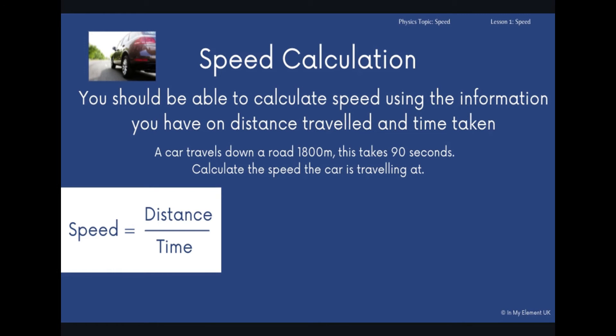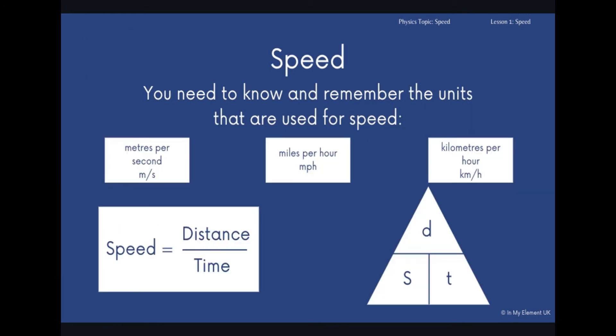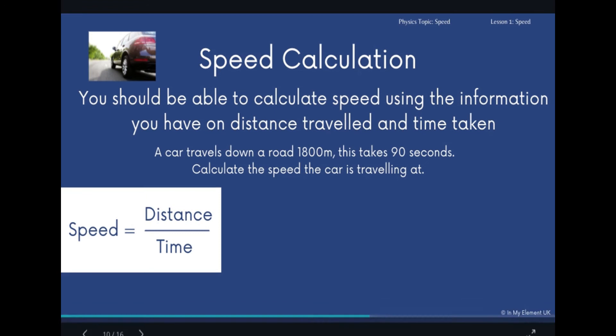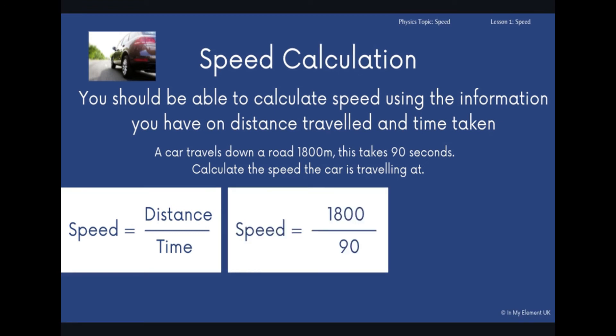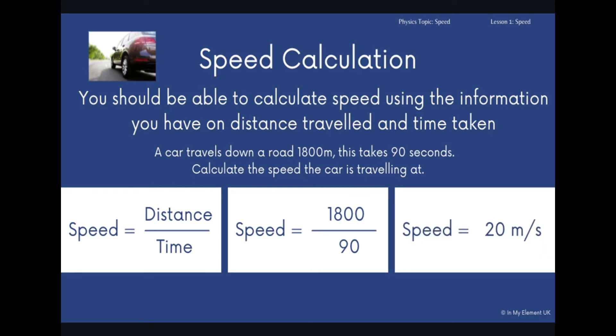In our formula triangle, we just pop back to here. In this formula triangle, we've got DST. Now, the S being the speed. This means it's distance divided by time. You substitute in for distance, 1,800 and for time, 90. That will give you the answer of 20 meters per second. So the car has traveled 20 meters in one second.